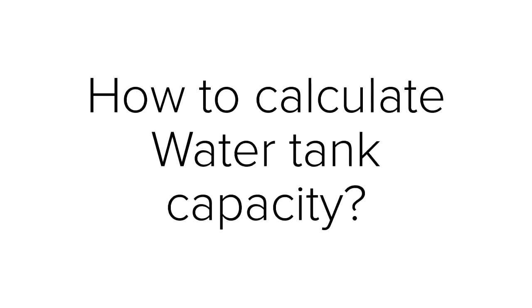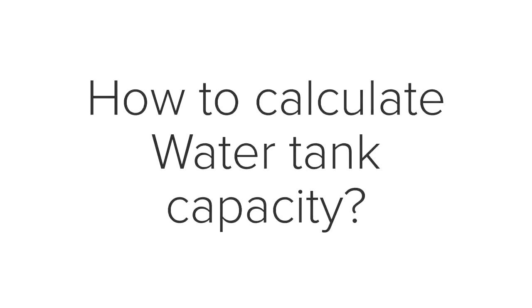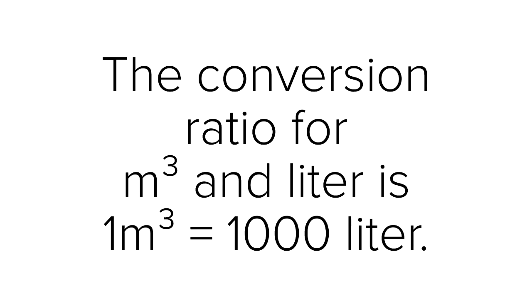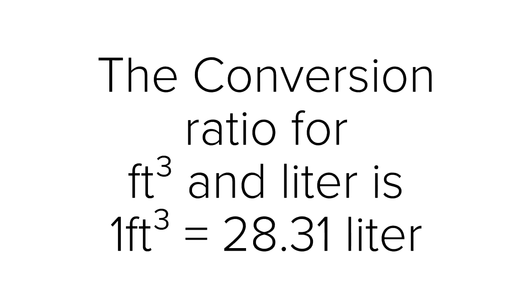Hi there, welcome to Something of Everything. In this video we will learn how to calculate the water tank capacity. The conversion ratio between meter cube and liter is 1000 liter per meter cube, and the ratio for cubic foot to liter is 28.31 liter per cubic foot.